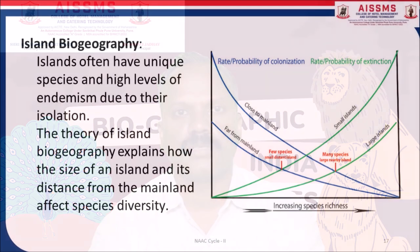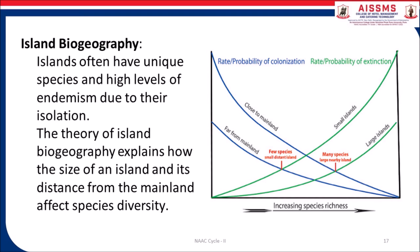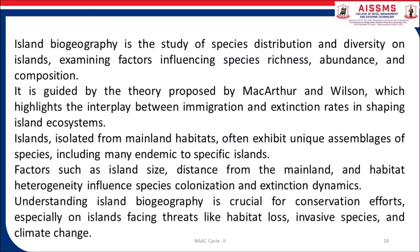Islands often have unique species and high levels of endemism due to their isolation. The theory of island biogeography explains how the size of an island and its distance from the mainland affect species diversity. Island biogeography is the study of species distribution and diversity on islands, examining factors influencing species richness, abundance and composition. It is guided by the theory proposed by MacArthur and Wilson, which highlights the interplay between immigration and extinction rates in shaping island ecosystems.